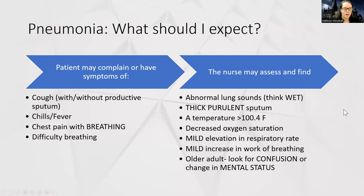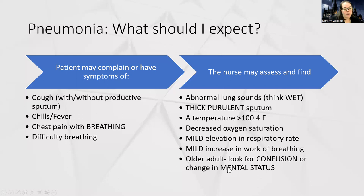The nurse may assess abnormal wet lung sounds like coarse crackles and ronchi, along with thick purulent sputum. Temperature is usually greater than 100.4°F. Oxygen saturation may be lower than normal, and we might see mild elevations in respiratory rate and work of breathing — that's expected, but it should not be severe. In older adults, we may not even know they have pneumonia until we look at their mental status or look for confusion, since many older patients' first sign of infection is confusion or not acting like themselves.